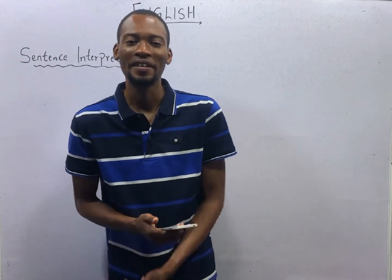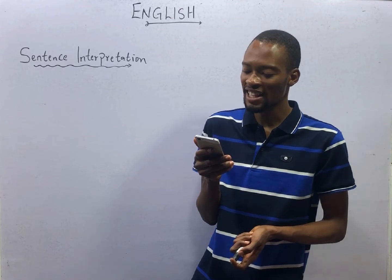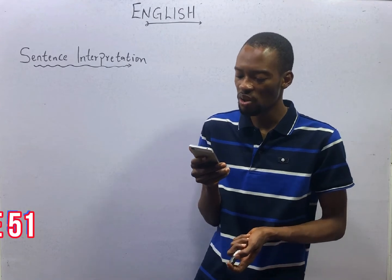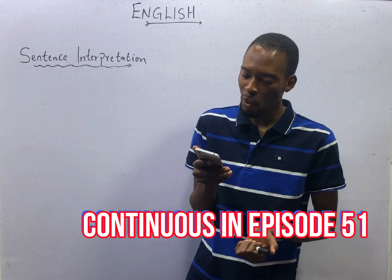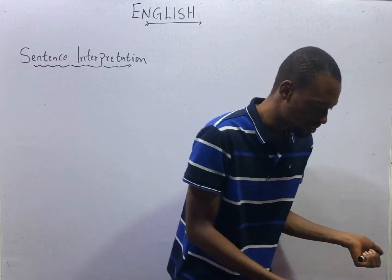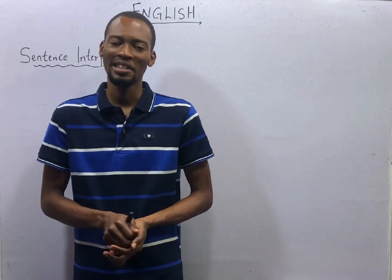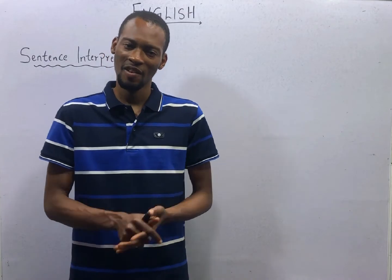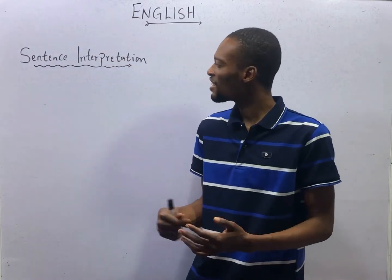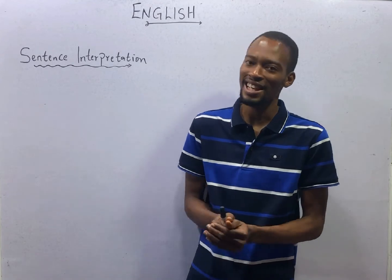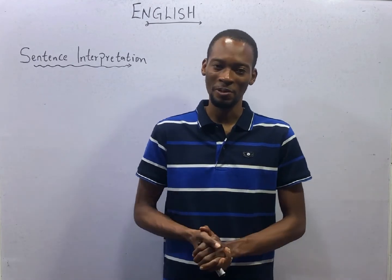The last question for this episode: 'James and Henry were as daggers drawn when I knew them.' This means that they were always angry with each other. To be at daggers drawn means they were always angry with each other. Ladies and gentlemen, that brings us to the end of this class. I hope you found these helpful. See you in the next episode.